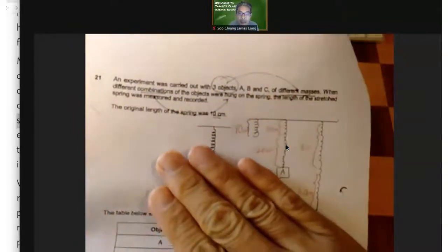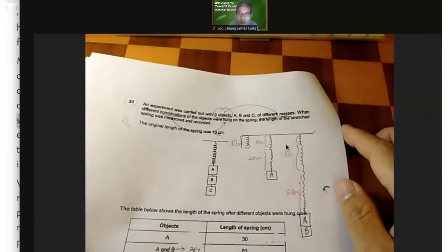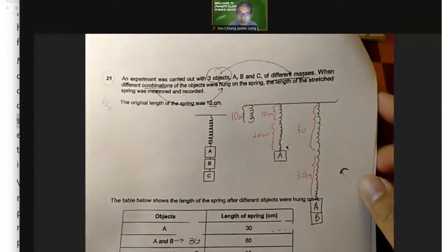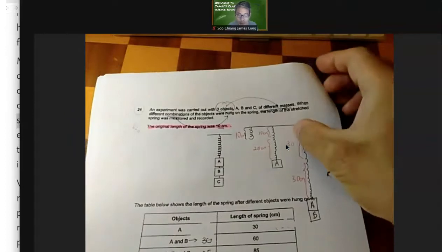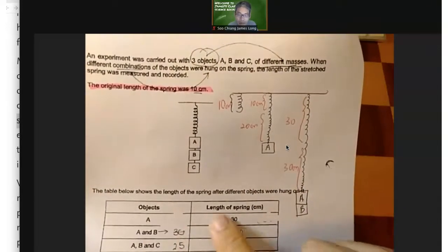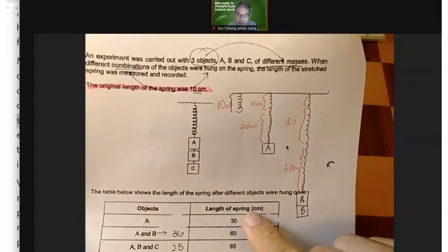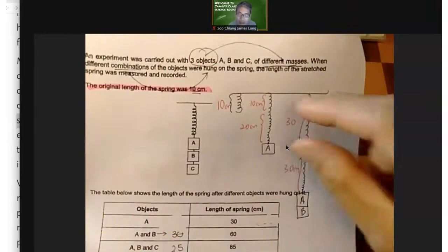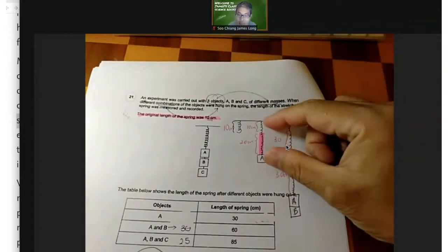Now this question. An experiment was carried out with three objects A, B, and C. They are of different masses. When different combinations of the objects were hung on the string, the length of the stretched string was measured and recorded. Now what is important, and I think you missed that out, was this: the original length of the spring was 10 cm. So let me draw this out for you to see. This is the original length of the spring before any load was attached to it. Once you attach object A to it, the length of the spring becomes 30 cm. Remember, this is length of the spring, not extension. This is the extended length of the spring.